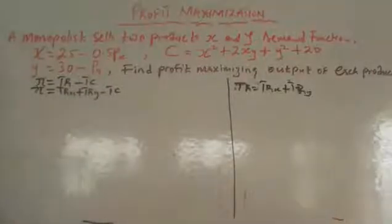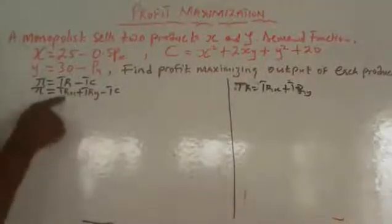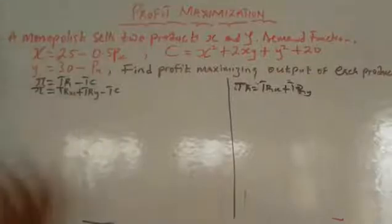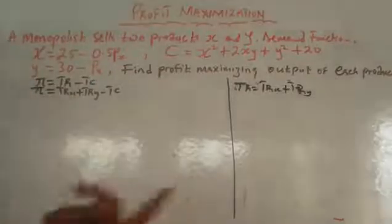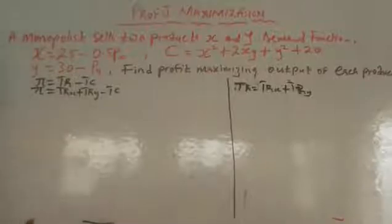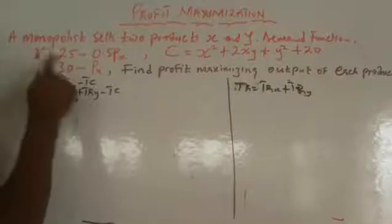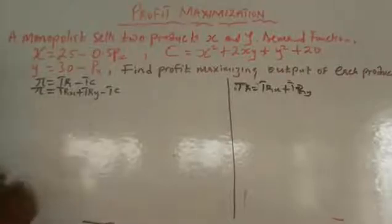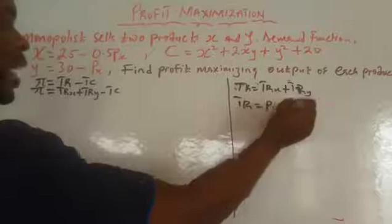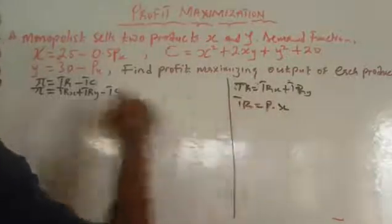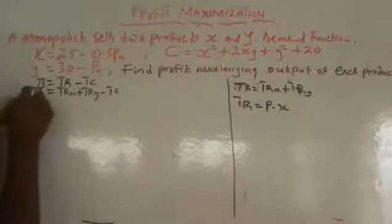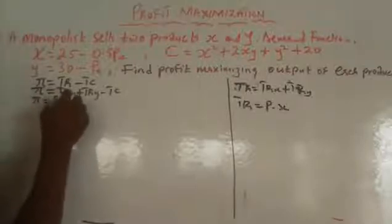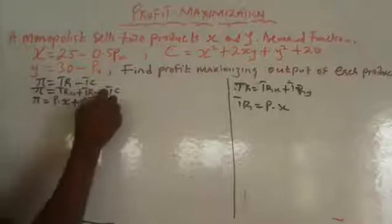That is the cost for the two products — and this is our TC. Now, having written this, we need our total revenue values. To get our total revenue, we look at the question — we don't have the direct function for total revenue. So we need to use the formula P times Q. Since X is our Q, we use P times X for commodity X, and P times Y for commodity Y. So profit equals P times X plus P times Y minus total cost.